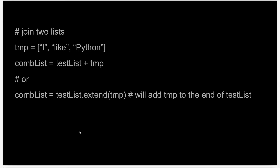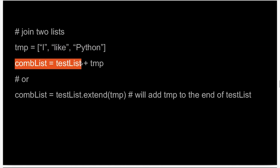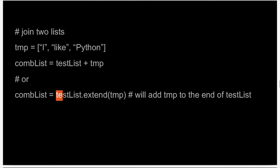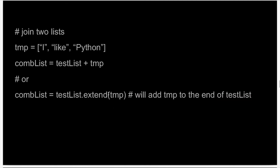Finally, joining two lists. There might be many different occasions where you'll have to join two lists. You can create a new list and in order to join, you can simply use the plus operand: the name of the new combined list equal to the name of the first list plus the name of the second list. Or you can also use the extend method: write the name of the first list dot extend, and in parenthesis, you write the name of the list you want to add. Keep in mind that the list specified inside the parenthesis will be added to the end of the first list.